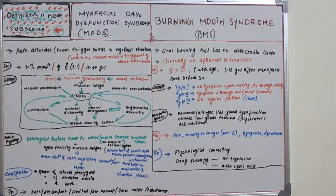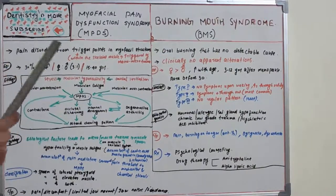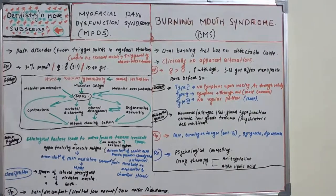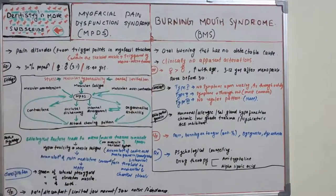We'll begin with Burning Mouth Syndrome. It is a burning sensation without any detectable cause — a burning, painful, or itching sensation located in the oral mucosa. The tongue is the most affected part, followed by the lips and palate. Clinically, no apparent alterations are present in the patient's mouth.